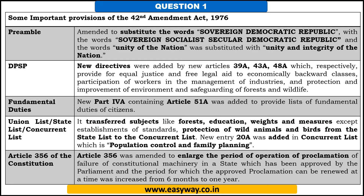Here is a list of some important provisions of the 42nd Amendment Act 1976. Regarding the preamble, there was a substitution of words — instead of 'sovereign democratic republic,' it was replaced by 'sovereign socialist secular democratic republic,' adding two important terms: socialist and secular. Also, 'unity of the nation' was substituted with 'unity and integrity of the nation.' Under directive principles of state policy, new articles were added: 39A, 43A, and 48A.